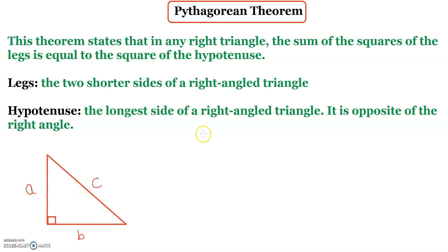Therefore we have a squared plus b squared equals to c squared. So this is what this theorem states.